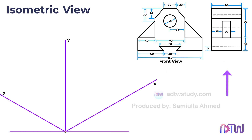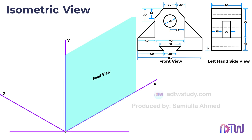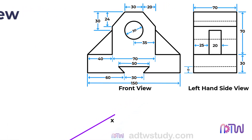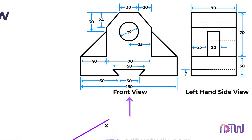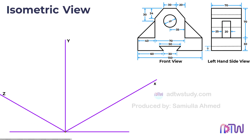The figure on the left-hand side represents the front view, while the figure on the right-hand side represents the left-hand side view of the object. To depict the front view we will draw it on the xy plane. We will start by constructing the outline for the base. The length of the base is 150 millimeters while the total width of the base is 70 millimeters. Using a drafter, proceed to construct the outline for the base.